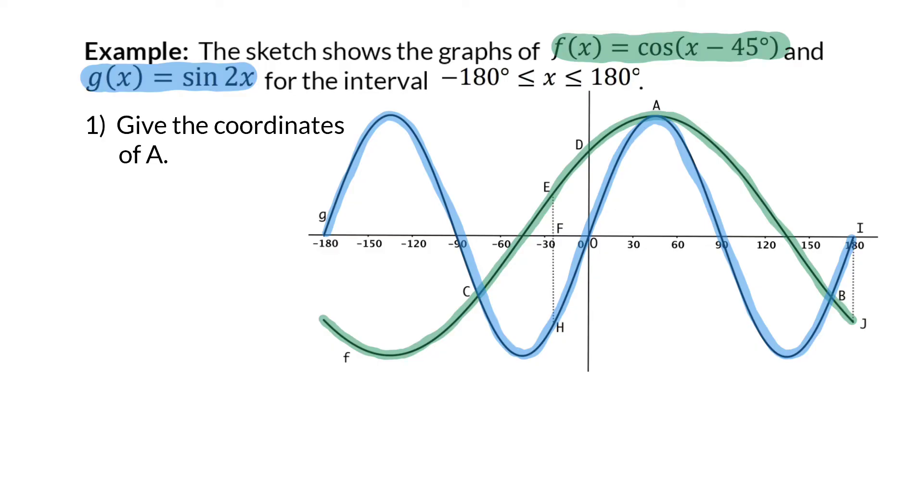Question 1: Give the coordinates of point A. If we go and have a look at point A, you will see that it is the maximum turning point for both these graphs. That means we can focus on either of the two graphs to determine this turning point. Graph f has moved 45 degrees to the right. For the basic cos graph, the maximum turning point is on the y-axis at 0 degrees, and that has now moved 45 degrees to the right, and therefore, the x-coordinate of point A is 45 degrees.